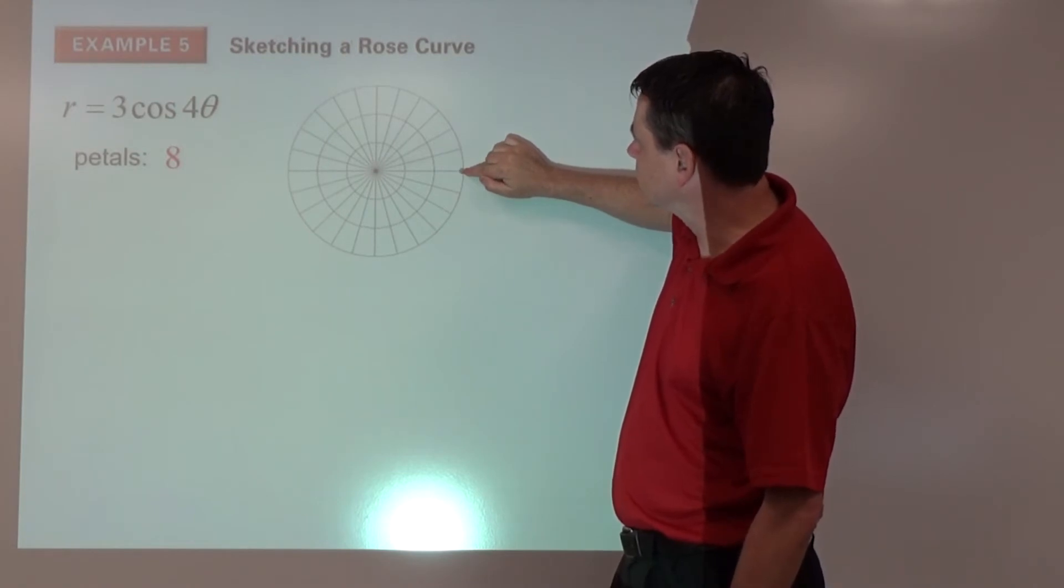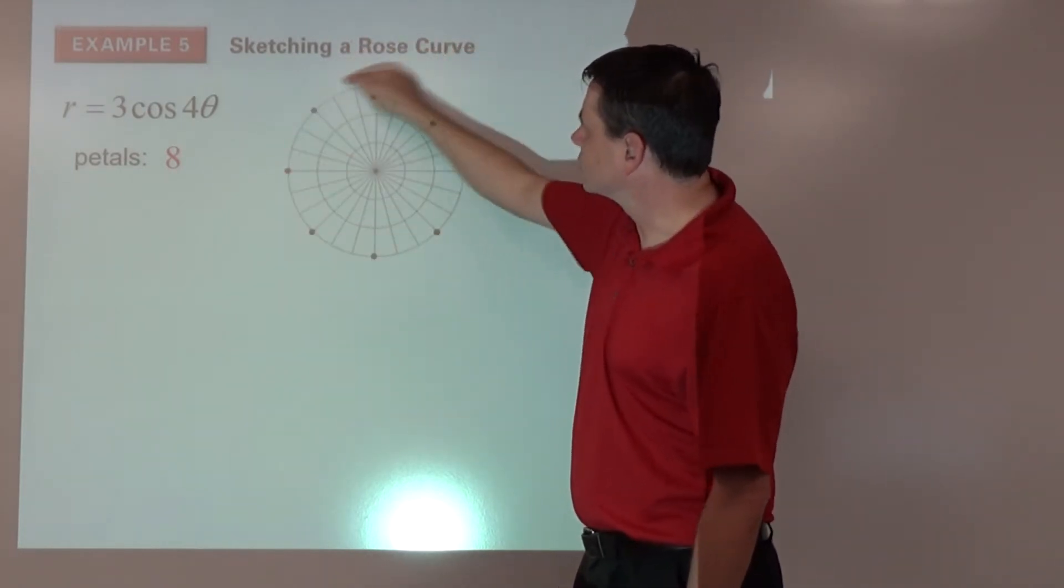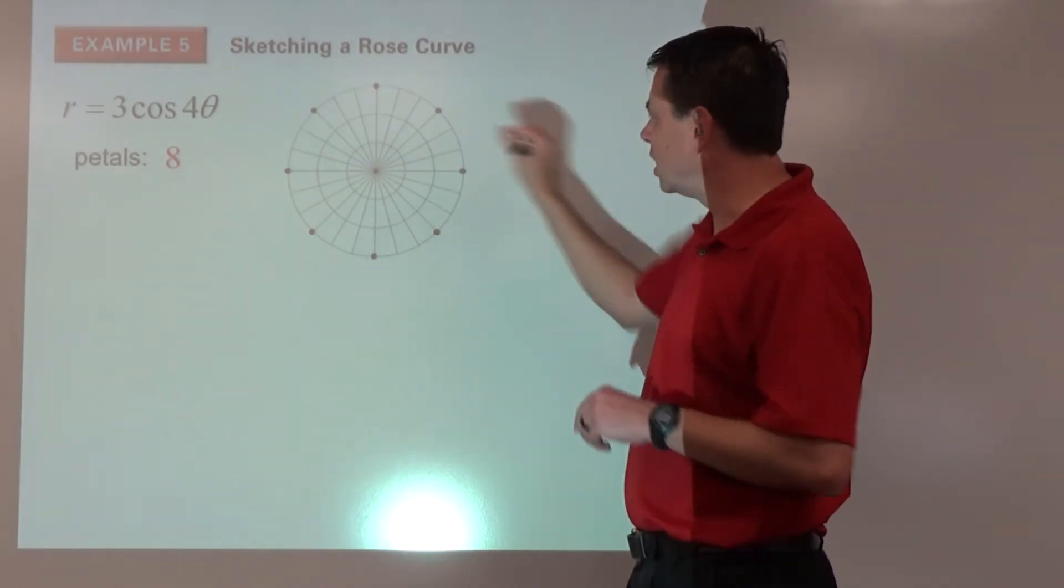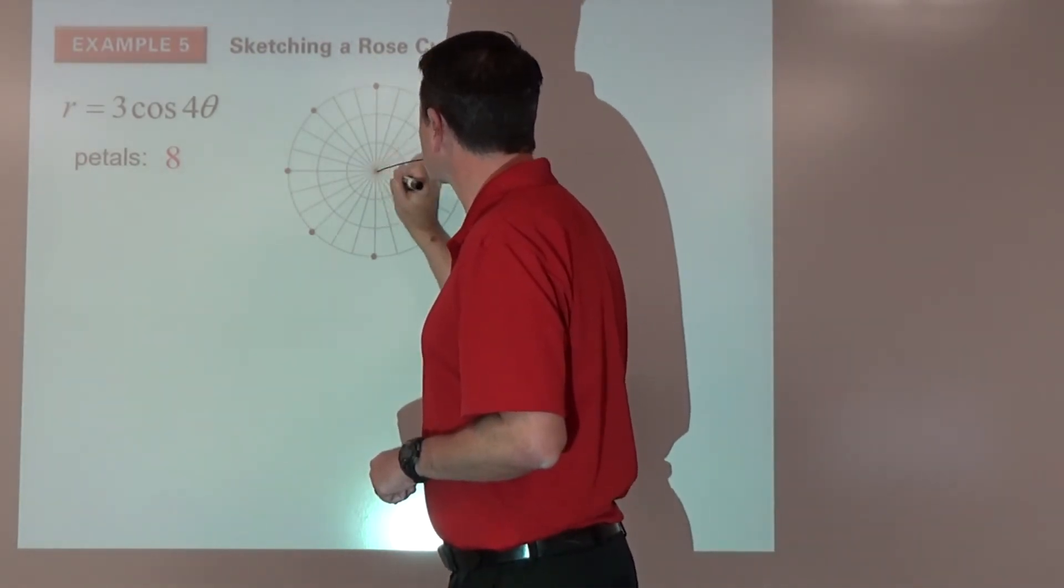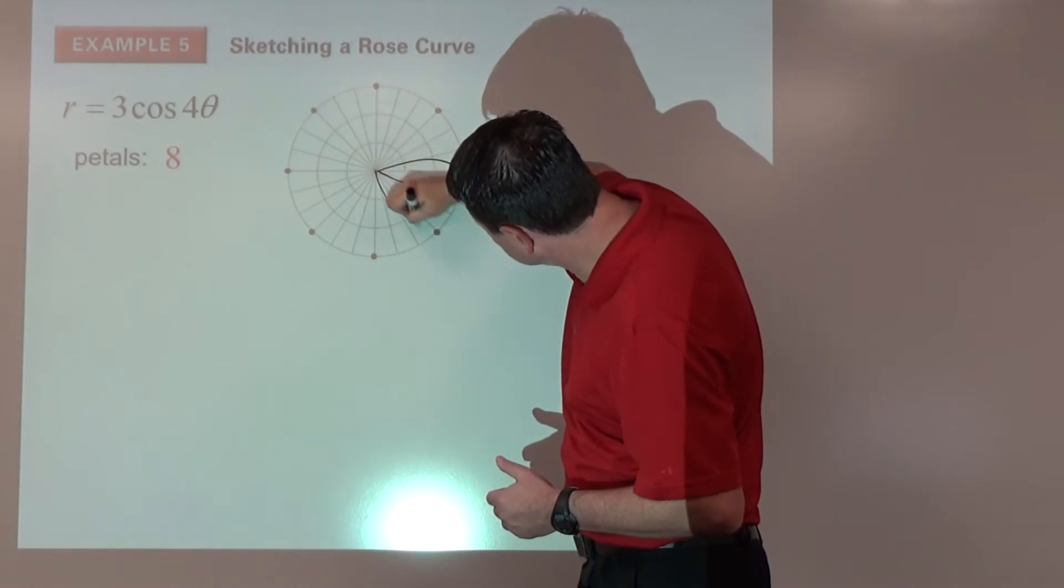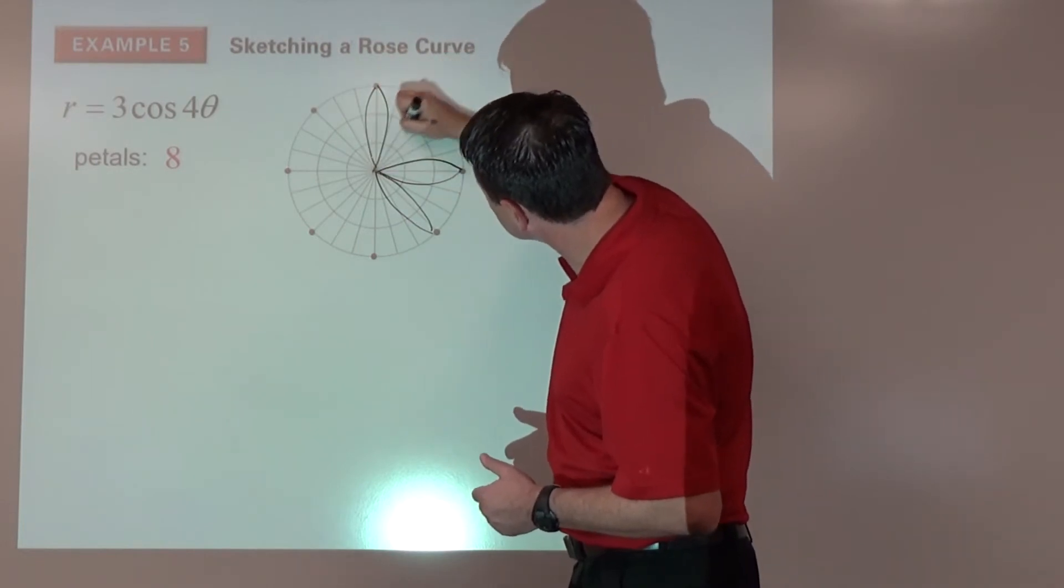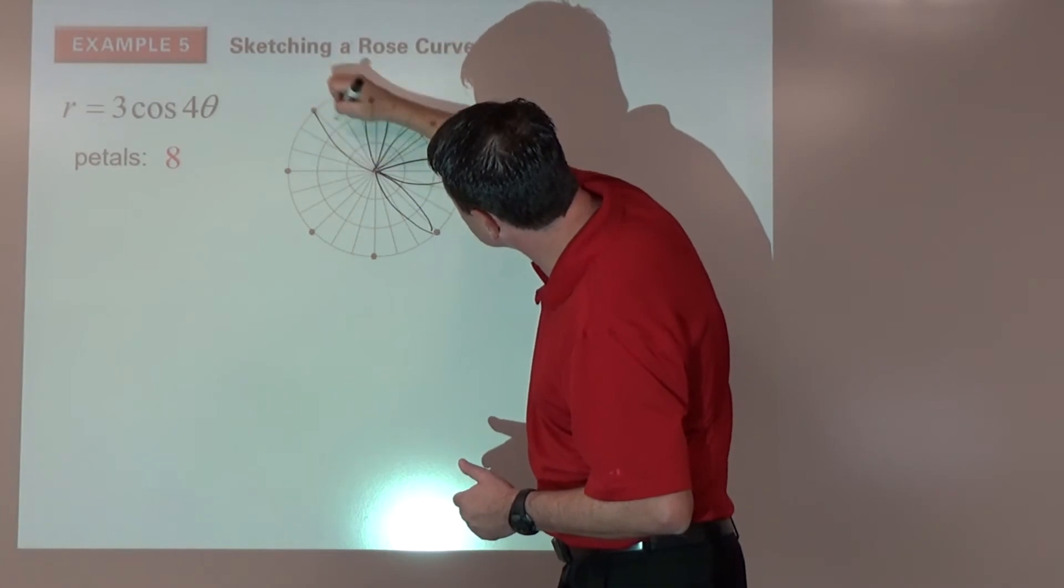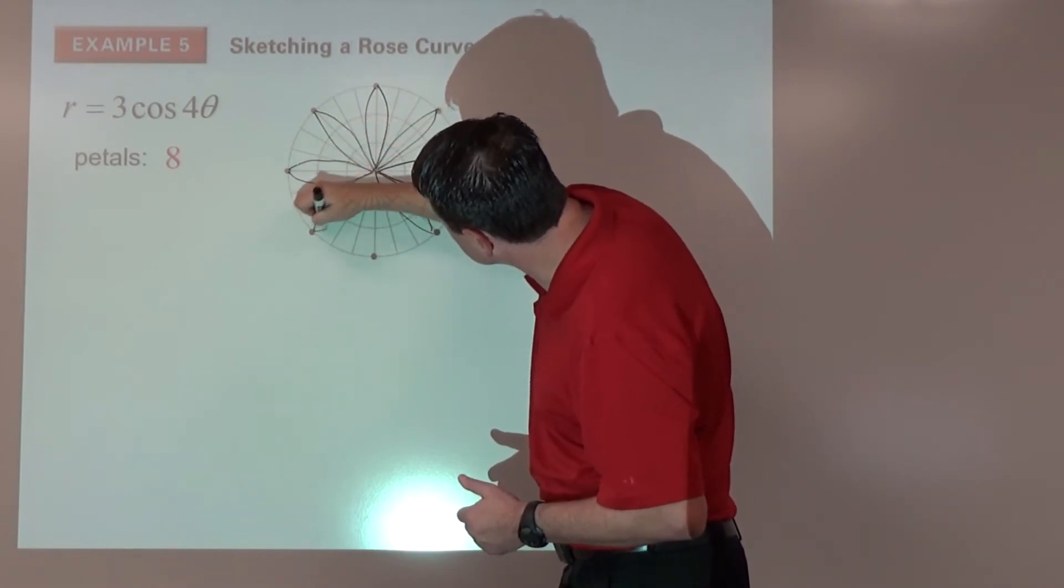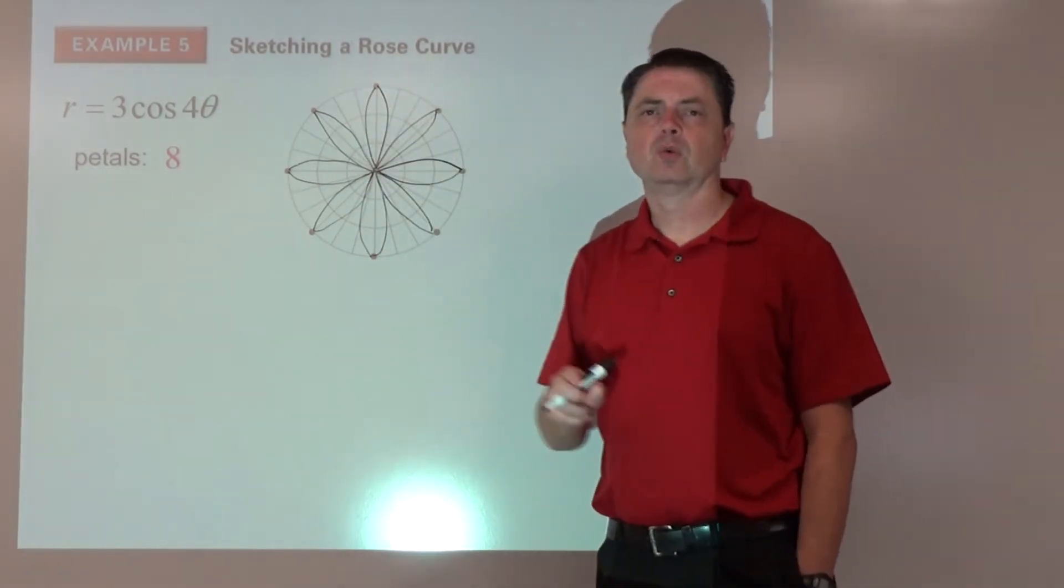If they're all equally spaced, there's going to be one at 45 degrees, 90, and so on. There's going to be 8 equally spaced petals. Then we could carefully draw them in. It's a little bit tricky because they don't actually overlap. That's essentially what the rose curve would look like.